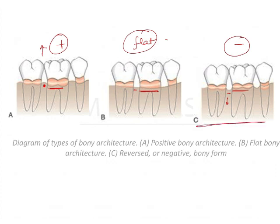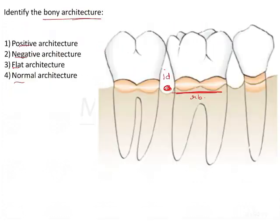In the given image, we have something similar to negative architecture. The interdental bone shows a concavity, and the highest point of the interdental bone is below the radicular bone. So this is negative architecture — option number two.